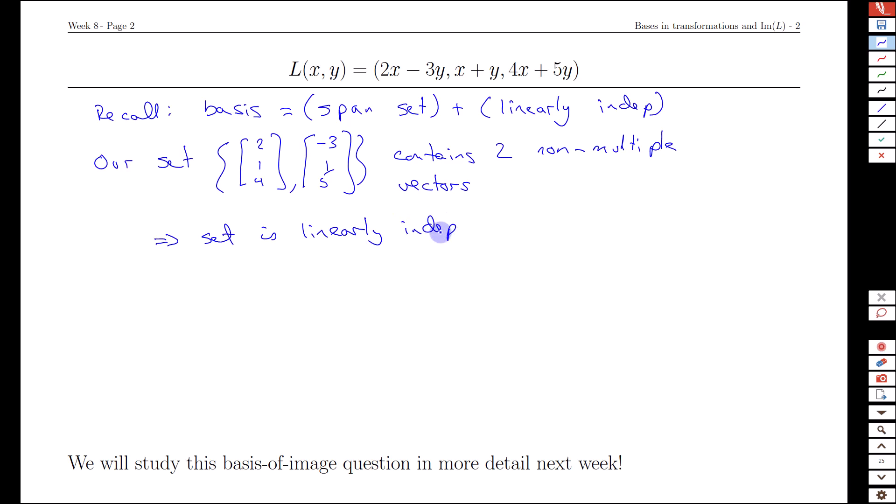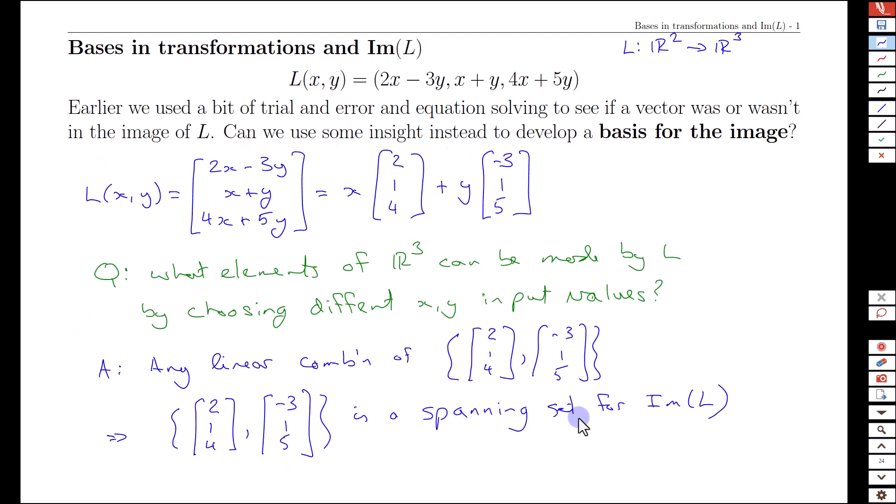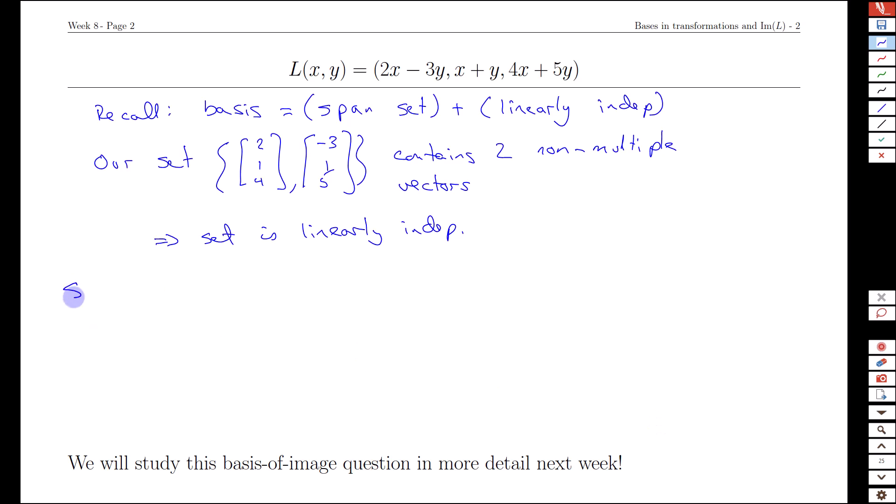Of course, if we had more vectors we'd need more sophisticated testing, but we have this nice easy rule for two vectors. This set is linearly independent, and combined with the earlier result that it's a spanning set for the image of L, let's draw out the full logic.